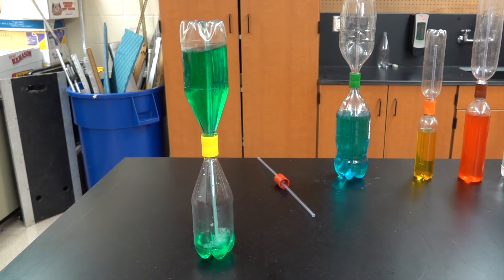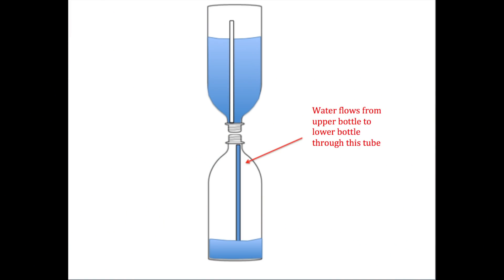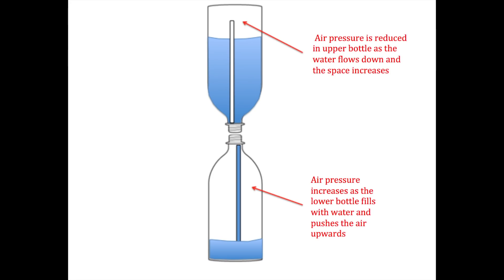Now, let's take a look and see how it works. When the bottle is turned over, water will flow through that tube into the lower bottle. This action reduces the air pressure in the upper bottle and increases the air pressure in the lower bottle.